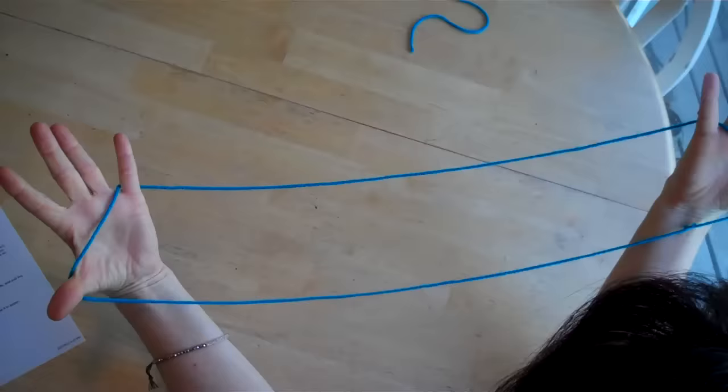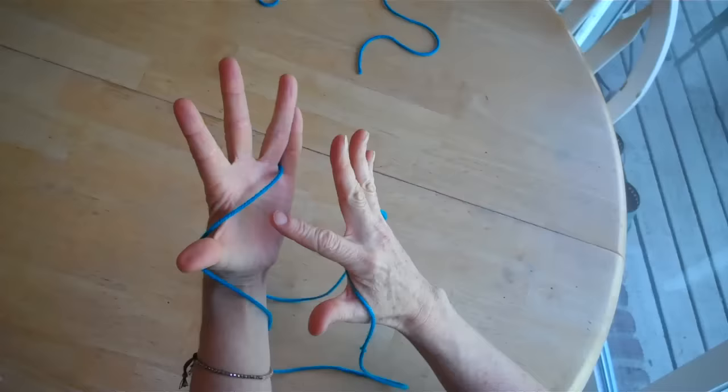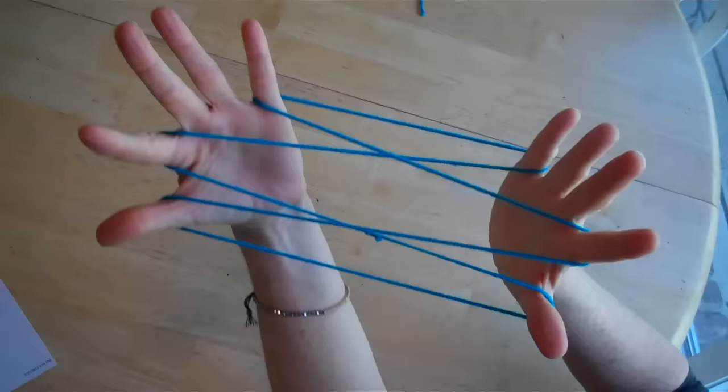Start with the string across both of your palms in the open position and over your thumb and pinky. Use your pointer finger to pick up the string from each of your palms. This position is called open A.